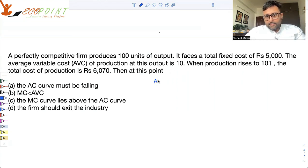Well, AVC is TVC upon Q. You are given with AVC as 10 and Q is 100.